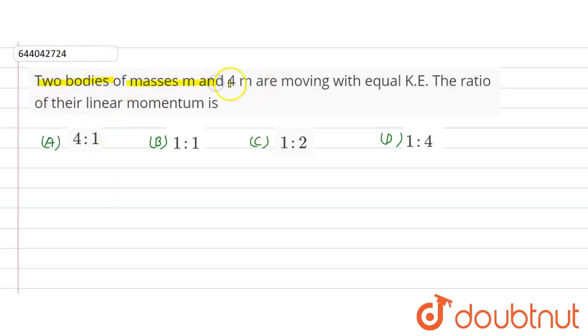Two bodies of mass m and 4m are moving with equal kinetic energy. The ratio of their linear momentum is? We know the relation between momentum and kinetic energy: p equals square root of 2 times mass times kinetic energy.